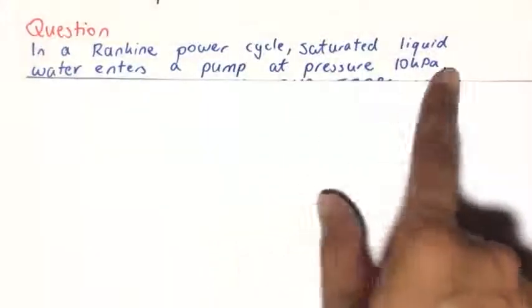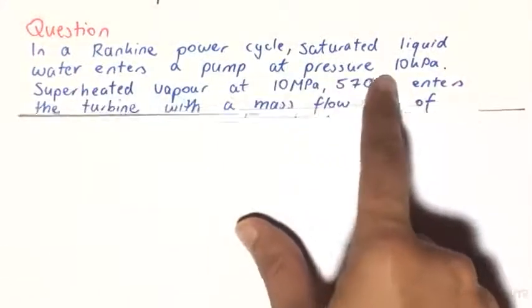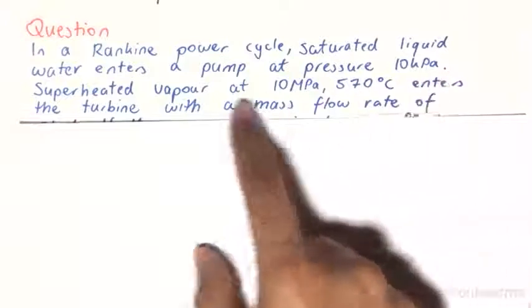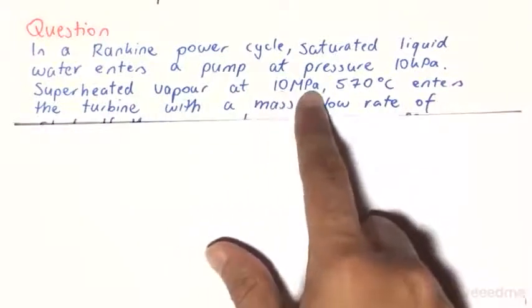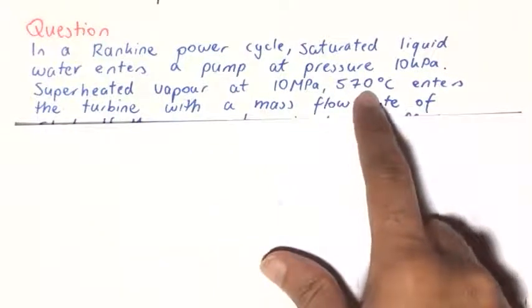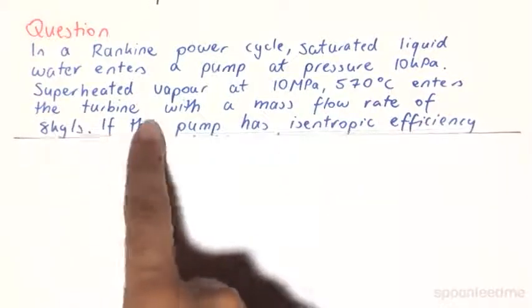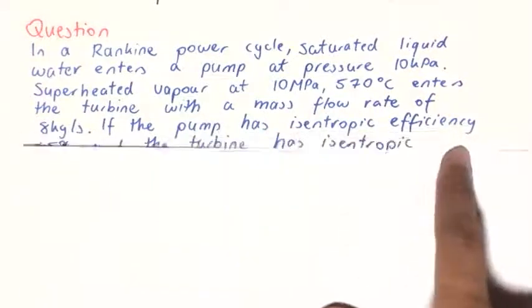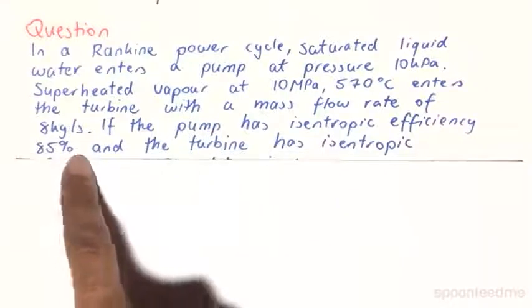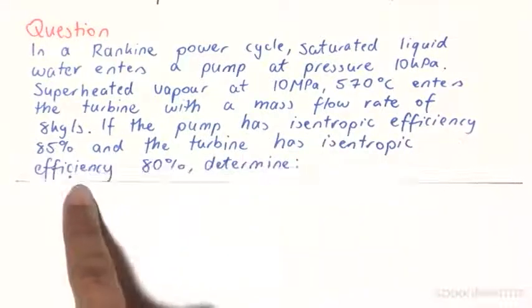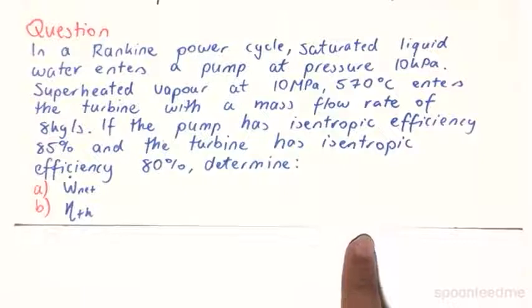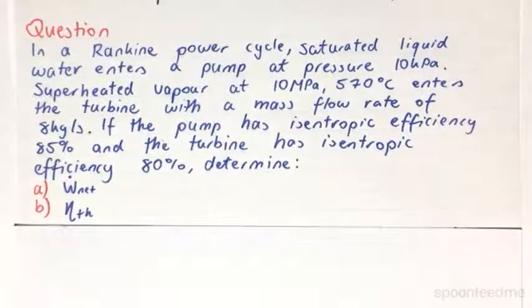In a Rankine power cycle, saturated liquid water enters a pump at pressure 10 kilopascals. Superheated vapor at 10 megapascals and 570 degrees Celsius enters the turbine with a mass flow rate of 8 kilograms per second. If the pump has an isentropic efficiency of 85% and the turbine has an isentropic efficiency of 80%, determine A, the network, and B, the thermal efficiency.